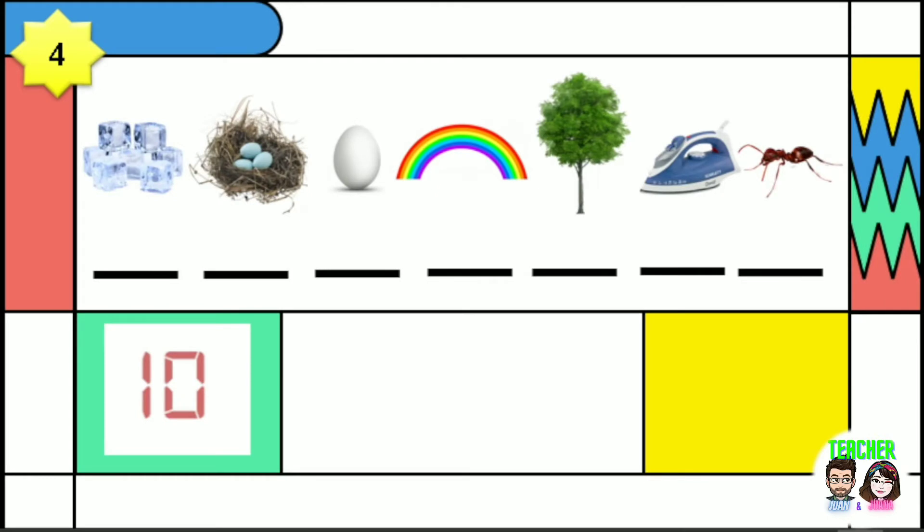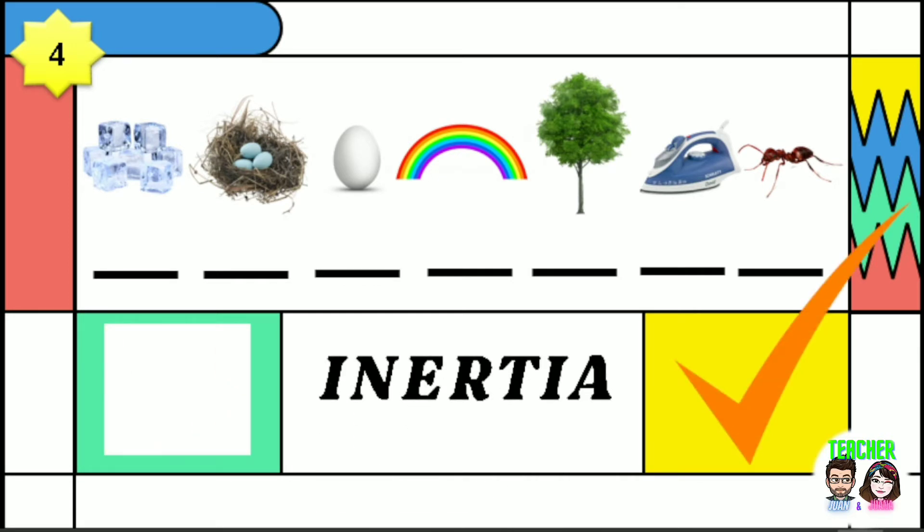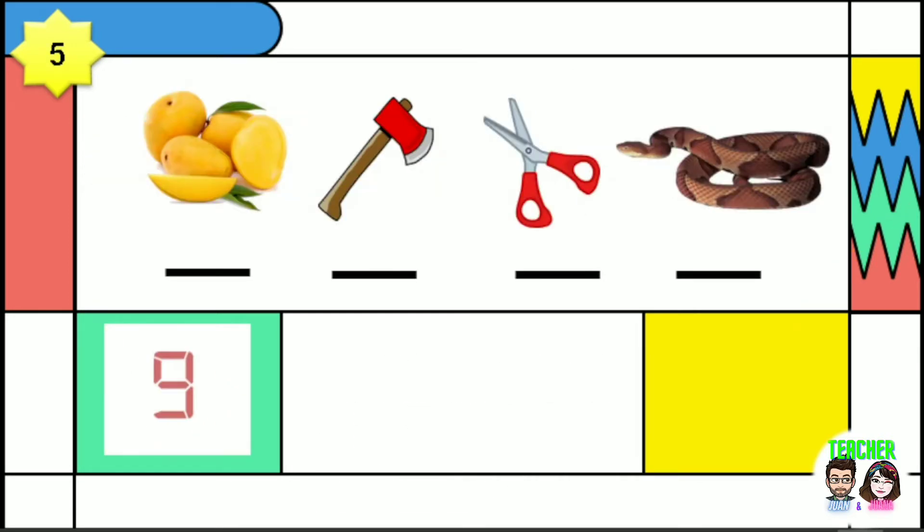Number 4. Great. It is inertia. Number 5. Correct. It is mass. Have you answered them correctly? Great.